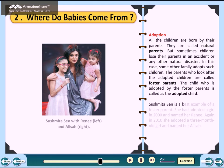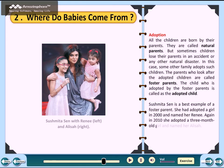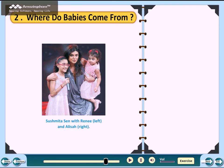Sushmita Sen is a best example of a foster parent. She adopted a girl in 2000 and named her Rennie. Again in 2010, she adopted a 3-month-old girl named Alisa. Sushmita Sen is shown here with Rennie on the left and Alisa on the right.